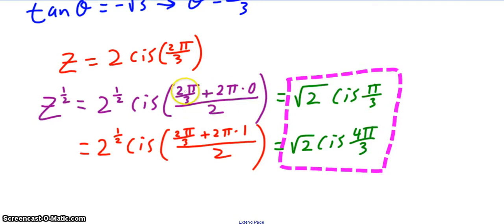All right, this 2π/3 plus zero over two is just π/3, and 2π/3 plus 2π over two is 4π/3. So that's how we come up with our answer.